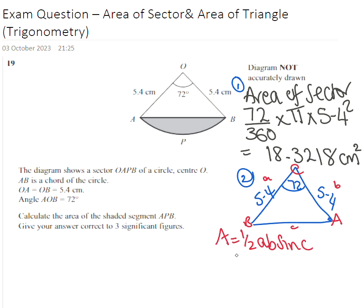Put it into the formula: half times 5.4 multiplied by 5.4 and then sine of 72.